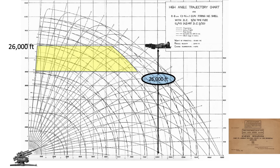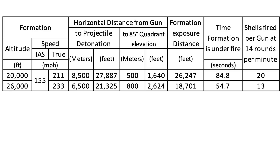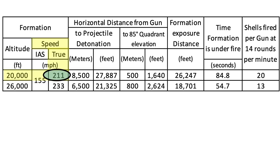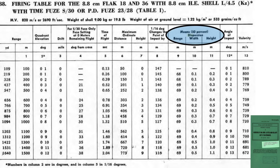We can calculate the same values for a formation at 26,000 feet. The number of shells fired at formations attacking at 20,000 feet is 53% more than at 26,000 feet, due to two factors: the reduction in flak exposure distance from 4.97 miles at 20,000 feet to 3.54 miles at 26,000 feet, and the increase in true airspeed from 211 to 233 mph at higher altitude — even though both formations fly at an indicated airspeed of 155 mph. This study does not account for the increase in projectile dispersion at higher altitude, which affects flak accuracy.